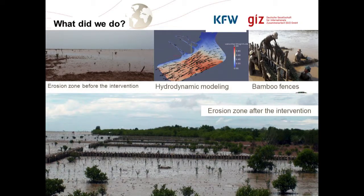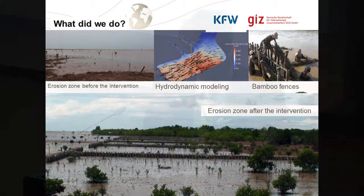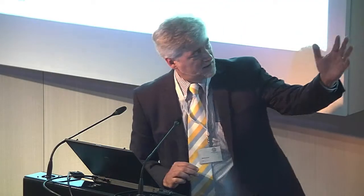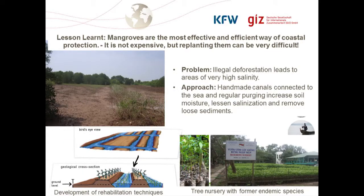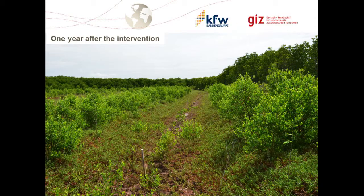And there, again, it is involving local institutions — the Ministry of Forestry and Environment and other institutions involved in the coastal zone. Behind that are also other approaches to mangrove rehabilitation, involving different institutions: forestry in terms of nurseries, and water management, which is very important for irrigation of the mangroves. After a year, it can look like this.